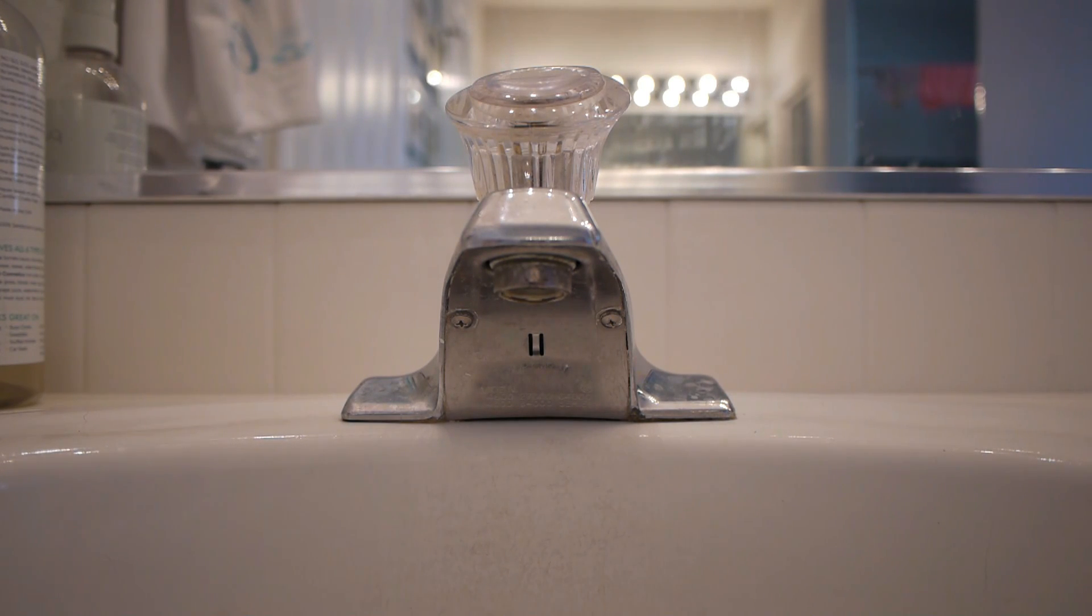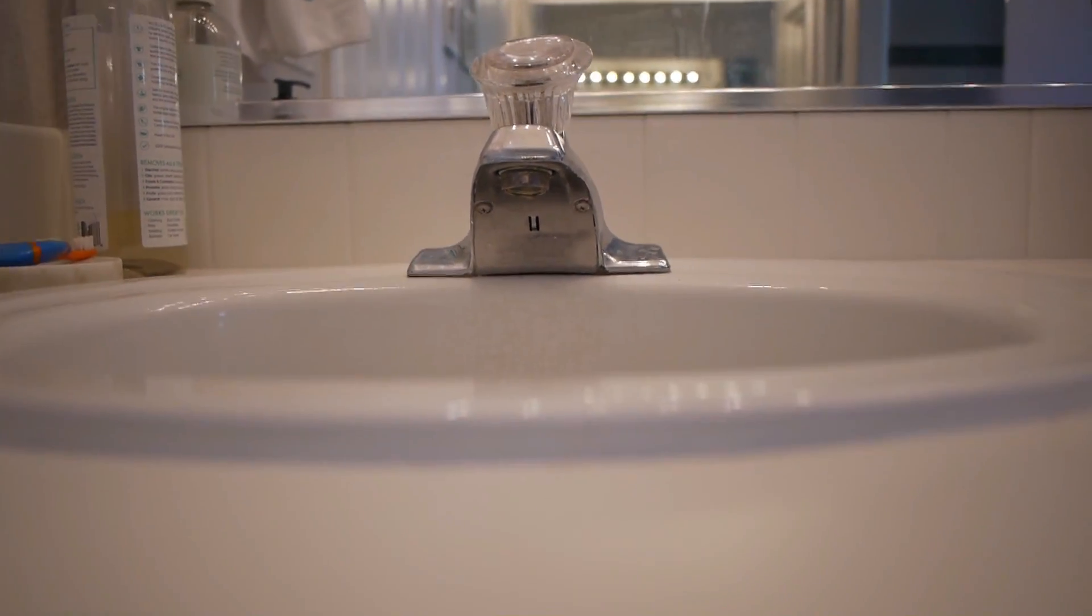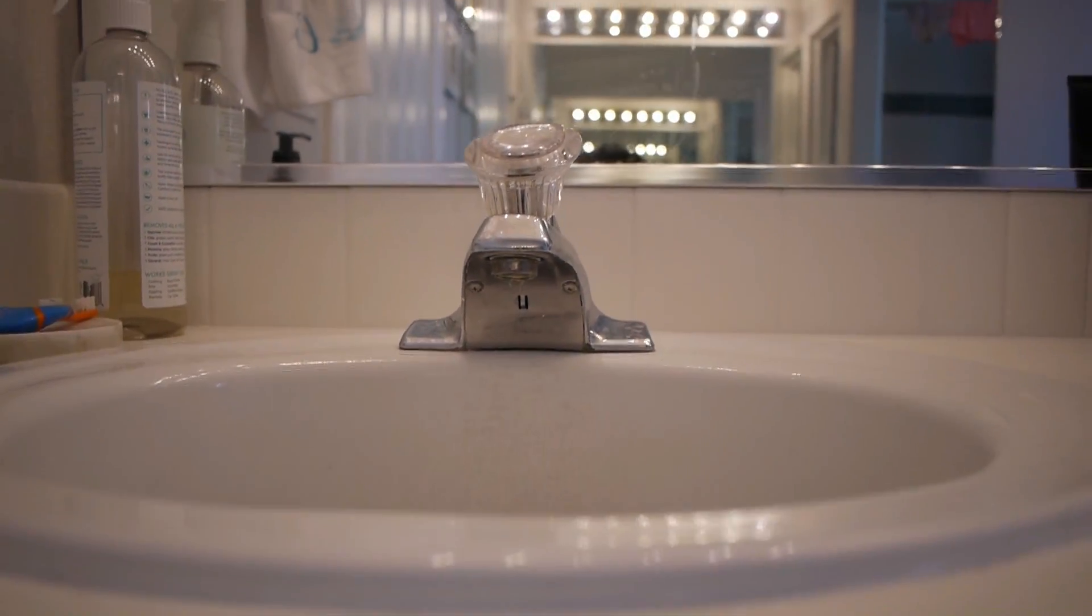Alright, so we got water dripping, probably some rubber washer or the valve are bad, so we're gonna address that today. First, you want to shut off the water supply. This is in the bathroom, usually under the sink somewhere. There are two valves, one for hot water, one for cold water. You want to completely close them.